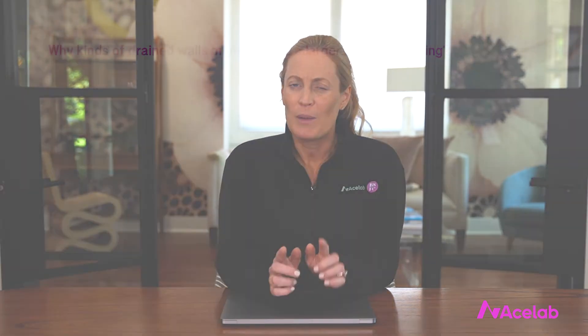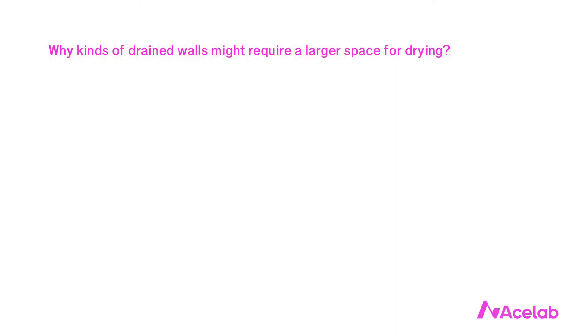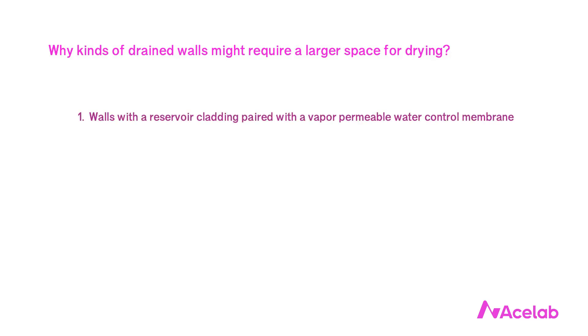These other design decisions are complicated and there are infinite combinations at play, so we often just overshoot the mark and provide more drying than we really need just to be safe. The danger with that, though, is that when we forget the why behind our decisions, we can introduce unnecessary constraints into our designs, limit ourselves in unnecessary ways, or spend more money than we need to. Let's look more carefully at these other design decisions that make a larger space between the cladding and the WRB necessary. The first condition requiring a larger space for drying is the use of a reservoir cladding paired with a water control membrane that is very vapor permeable.